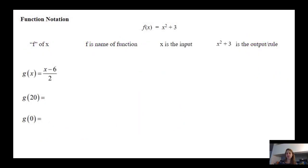Now on function notation. So here's an example of a function written in function notation. We pronounce the left side as f of x. F is the name of the function. See, it's represented there. X is the input, what's going into the function. And then x squared plus three is the output or the rule.